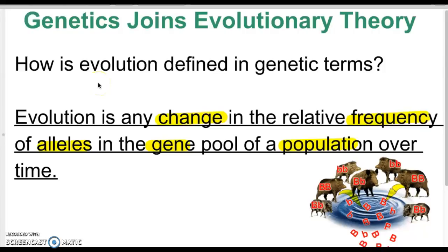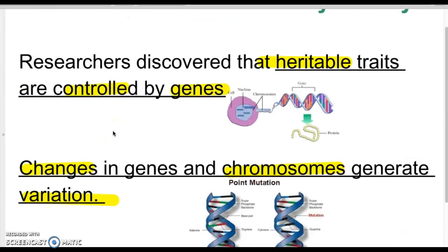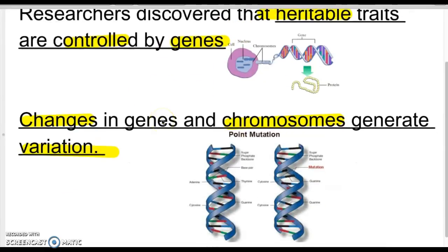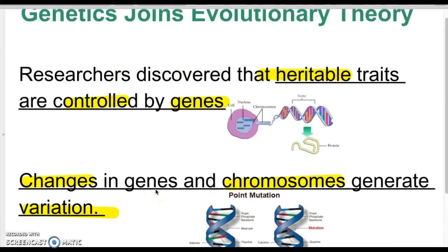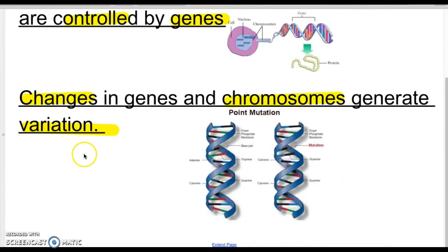When we look at evolution, we look at how the change in relative frequency of alleles in a gene pool in a population occurs over time. Natural selection is happening — how is that changing things at the genetic level? Researchers have discovered that heritable traits are controlled by genes, and changes in genes and chromosomes generate these variations. An allele frequency change could mean a new mutation introduced a new allele into the population.